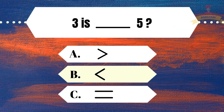3 is: A) greater than, B) less than, C) equal to 5. And the answer is B, less than.